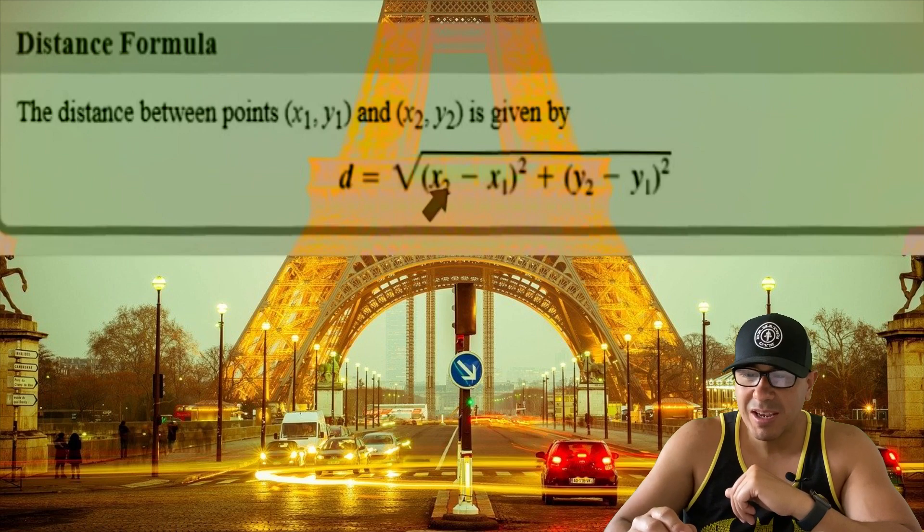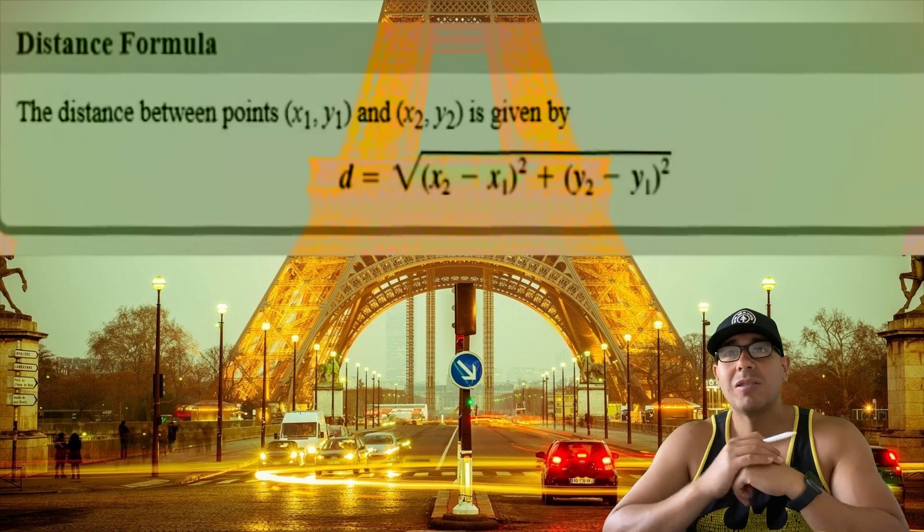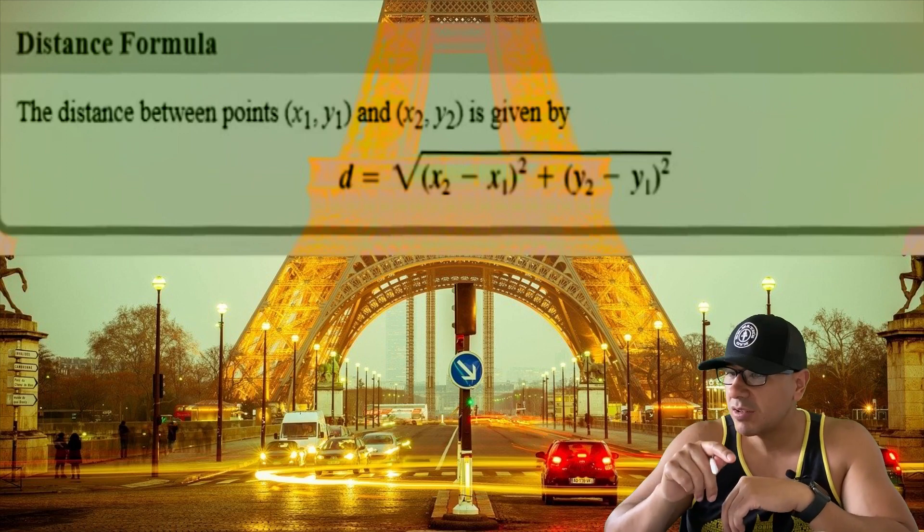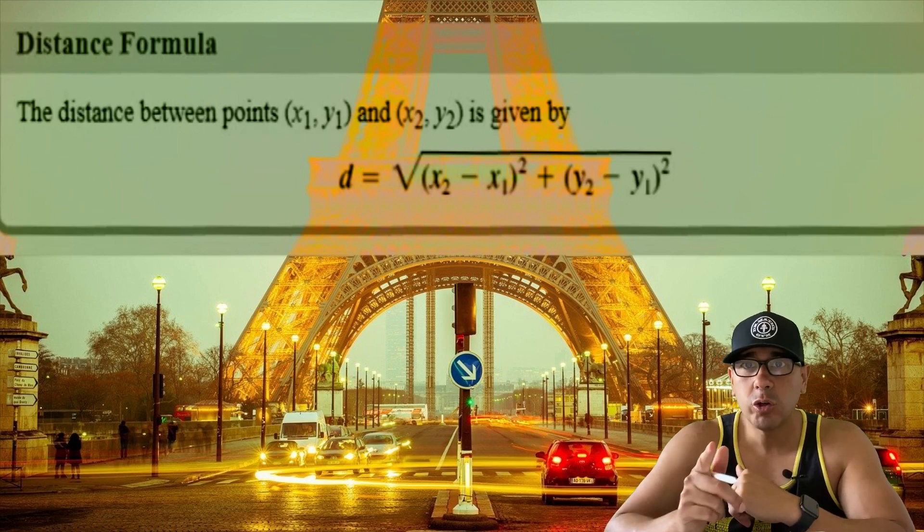This is our formula to find the distance: you take x₂ and subtract x₁ from it, and that quantity you square. Then you do the same thing with the pair of y's and square that. After you sum those two, you square root it. Let's dive in and look at an example. Make sure you stick around to the end because we have some practice problems for you.